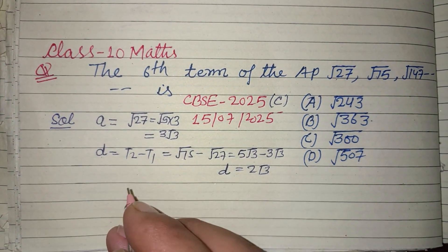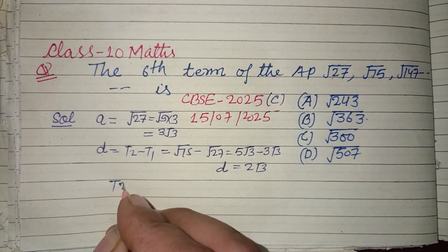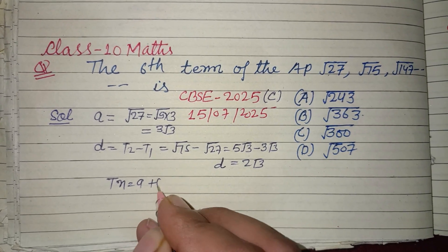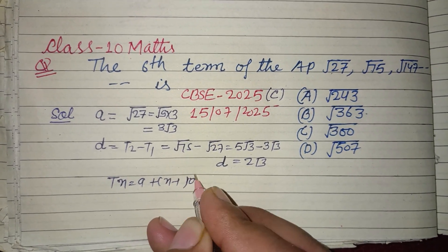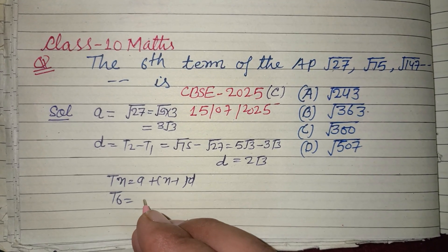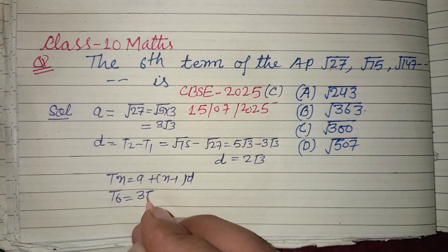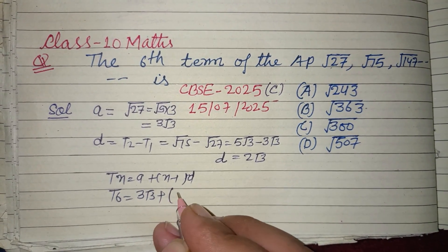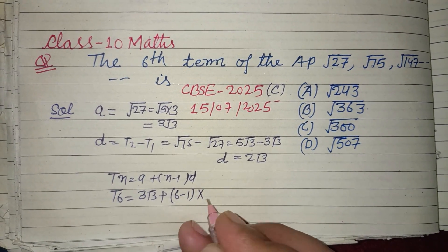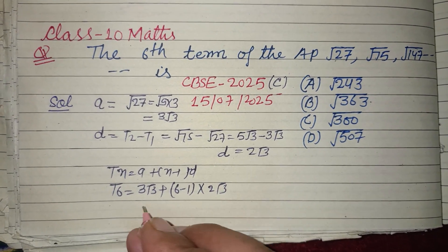The 6th term is asked. tₙ = a + (n-1)d. So t₆ = a, which is 3√3, plus (6-1) times d, which is 2√3. So this is